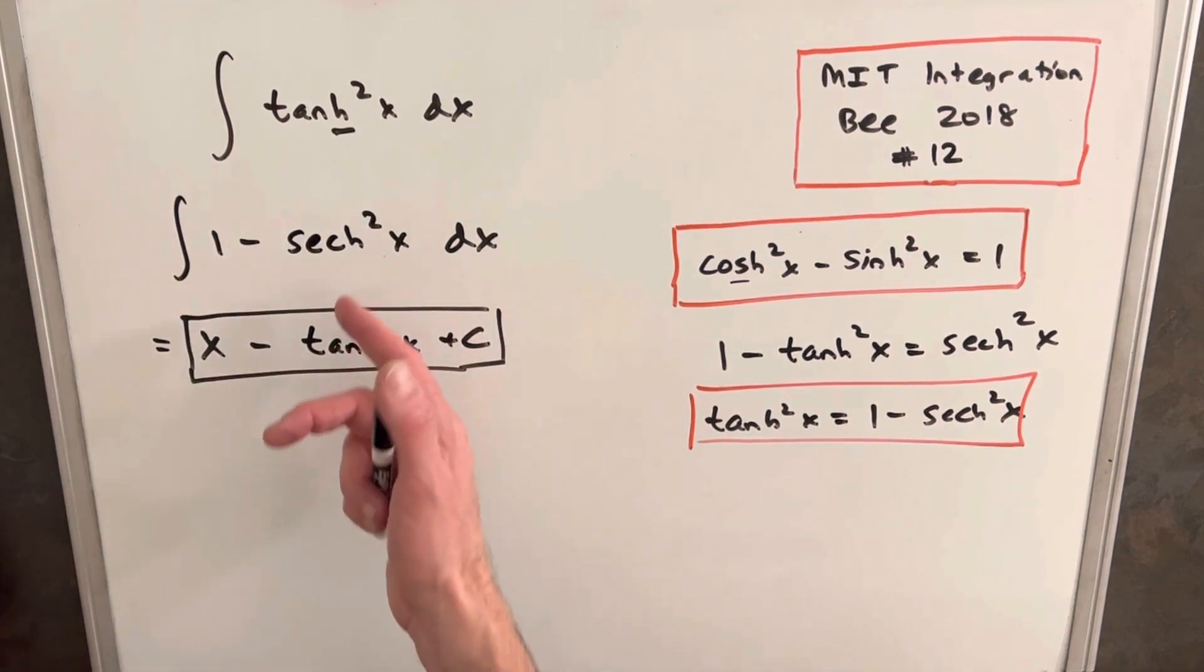And then you might be wondering, how do we know that the integral of hyperbolic secant squared is hyperbolic tangent? My method for this is just knowing the derivative, and we can look at that real quick.